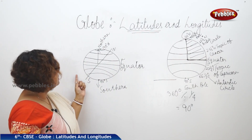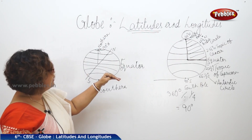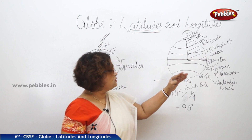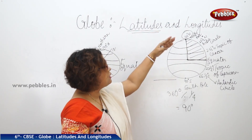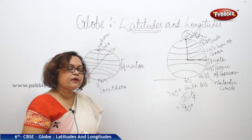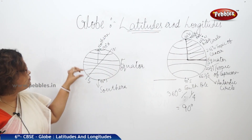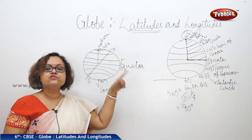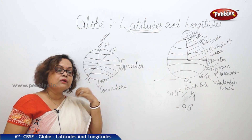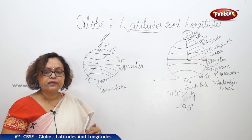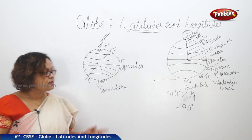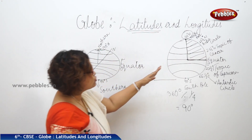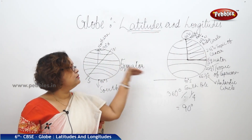Latitudes run from east to west and divide the Earth into the northern and southern hemispheres. Their names are: equator, Tropic of Cancer, Tropic of Capricorn, Arctic Circle, Antarctic Circle, North Pole, and South Pole. There are more — every one degree there is one latitude — but remember, all of these are imaginary lines that we created for our own benefit. We also call them parallels because they run parallel to each other.